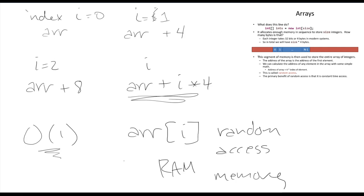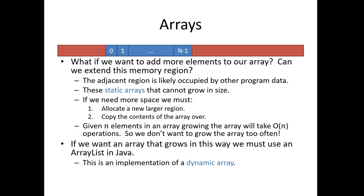That is the number one and best benefit of the array implementation of lists: we get this random access. We can jump around and calculate the address of any element very easily with very little cost to us. Now I want to continue our discussion by thinking about what happens if we run out of space in our array — we've maybe made space for 10 integers, but it turns out we needed 20 integers.